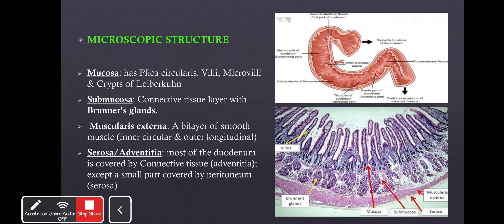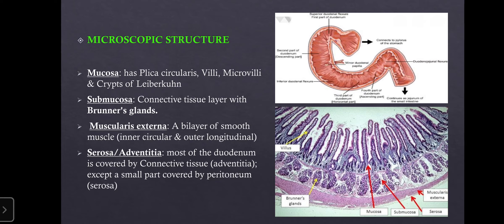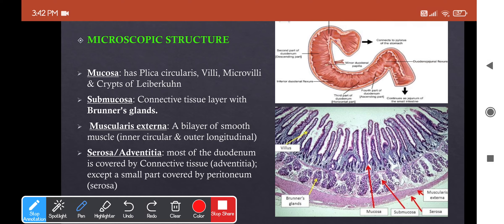The microscopic structure of the duodenum has four layers from inside to outside: mucosa, submucosa, muscularis externa, and serosa or adventitia. The mucosa has four main features: plica circularis (also called valves of Kerckring), which are permanent circular folds with a core of submucosa, present to increase surface area. These circular folds are absent in the initial 2.5 cm of the first part — that region is called the duodenal cap. Except for that region, the entire duodenum has these folds.